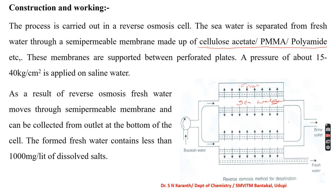The third method is electro-dialysis — a process of decreasing the concentration of salt in saline water using an ion-selective membrane under the influence of an applied EMF. When EMF is applied, ions migrate toward the oppositely charged electrode through the ion-selective permeable membrane. There are two kinds: cation-selective membrane, which allows only cations, and anion-selective membrane, which allows only anions. In this way, the concentration of ions is minimized and fresh water is collected from the sea water.